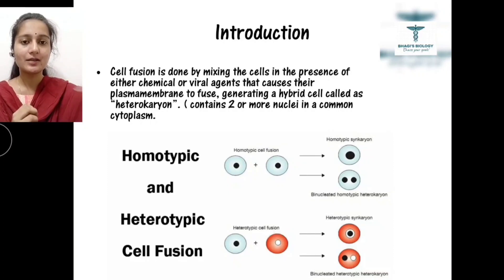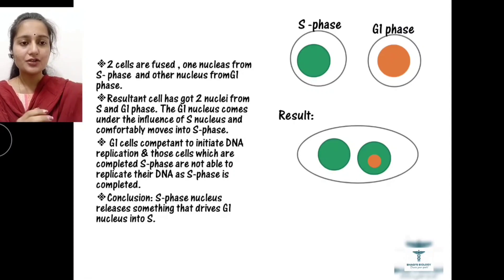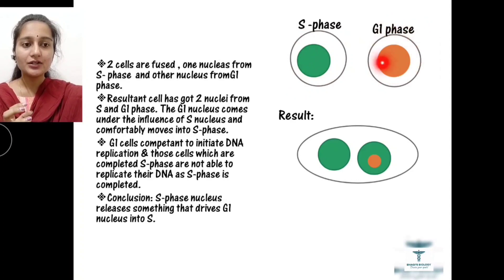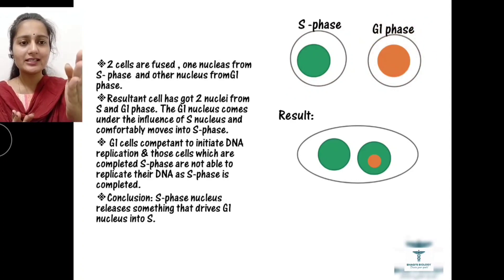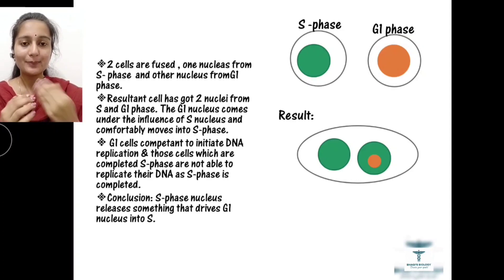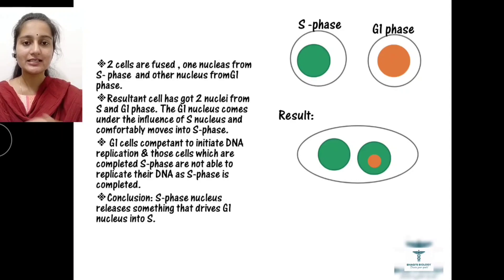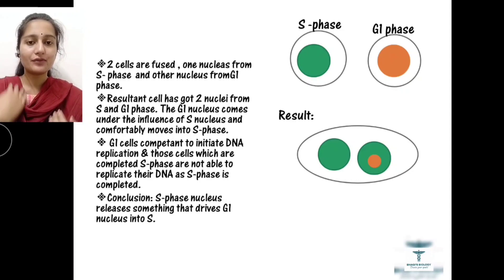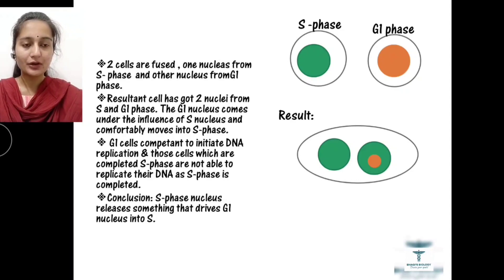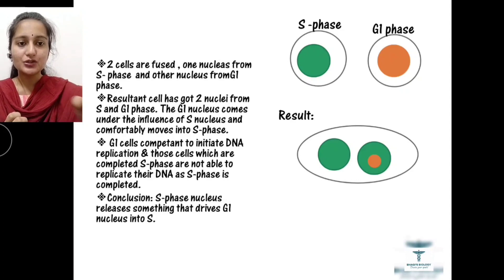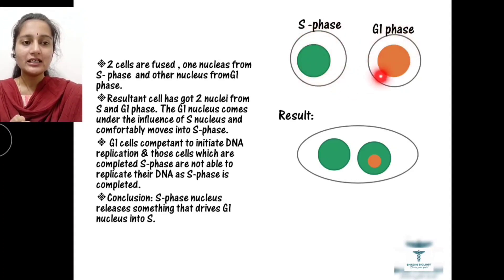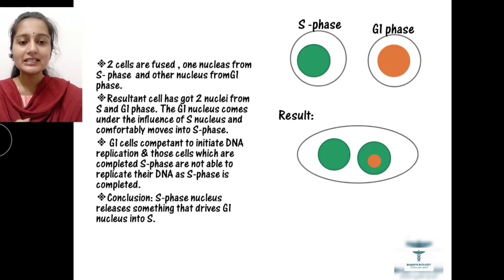As you can see on the screen, we are taking two cells: one from S phase and another from G1 phase. The S phase cell is undergoing DNA replication, while the G1 phase cell is in the first growth phase, synthesizing proteins needed for cell division. When these two cells are fused, one nucleus from S phase and one from G1 phase come together and nuclear fusion also occurs.